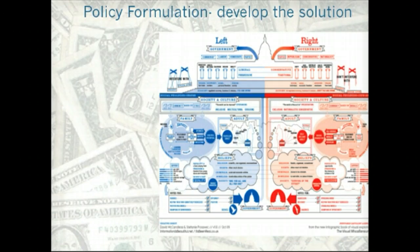The second step is policy formulation. Policy formulation is developing a solution to the problem that was identified. Congress, the president, lobbyists — they all think they know what is best for solving the problem.